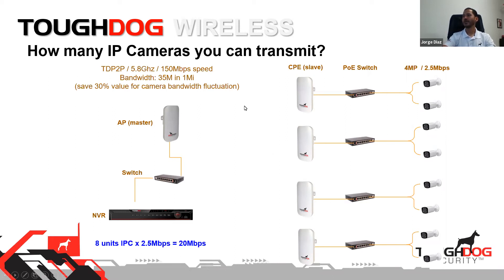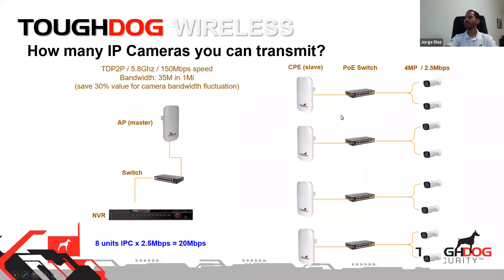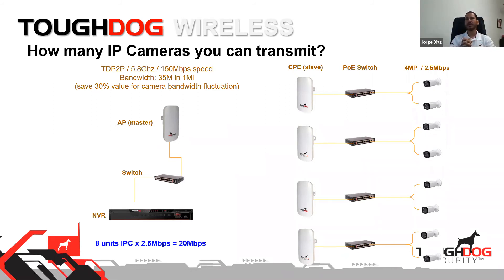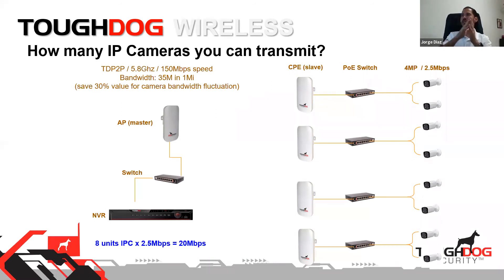If you're using the TDP2PX-900, which can handle up to 20 cameras, and you have a point-to-multipoint scenario, you divide those 20 cameras among the number of client units. Understanding this helps you make accurate calculations for your installations.